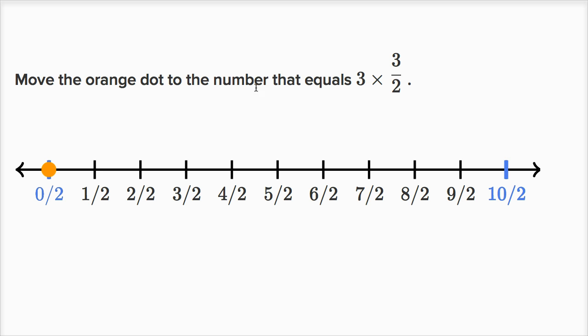So move the orange dot to the number that equals three times three-halves. So this is going to be zero, zero-halves, that's just zero, you could view that as zero times three-halves.